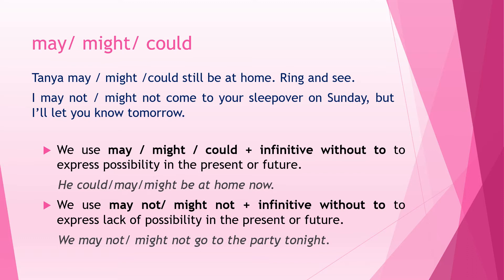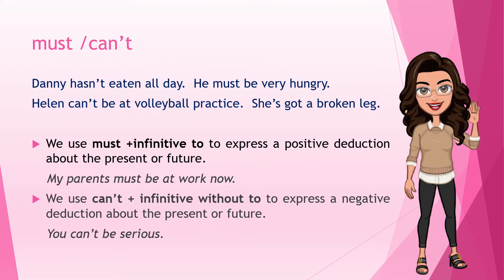We use 'may not' or 'might not' plus the infinitive without 'to' to express lack of possibility in the present or future — there is a negative connotation. For example: 'We may not go to the party tonight' or 'We might not go to the party tonight.'